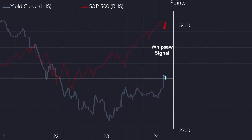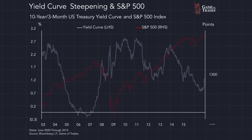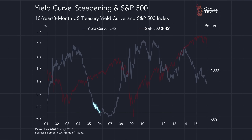This is what you call a whipsaw signal, and it's definitely not the first time that we've witnessed this. If we rewind to 2006, you can see it inverted initially in February of 2006. Then the yield curve began to un-invert, and this actually coincided with a brief correction in the stock market. Look at what happened right after that — the yield curve re-inverted as the recession was postponed and that allowed the S&P 500 to break out to new highs.